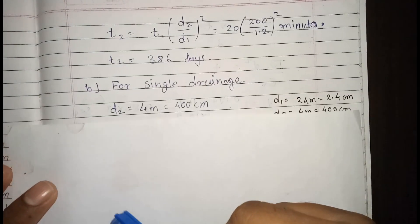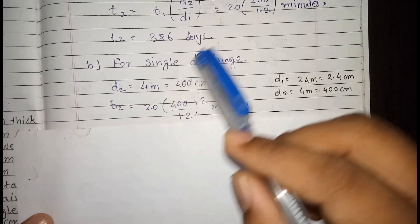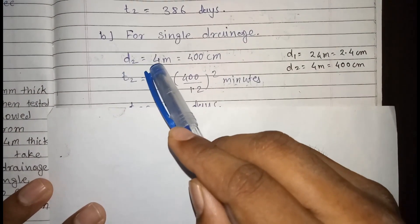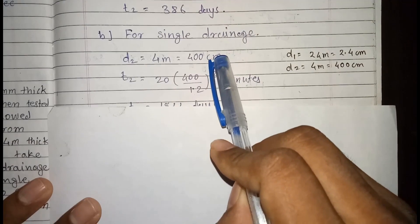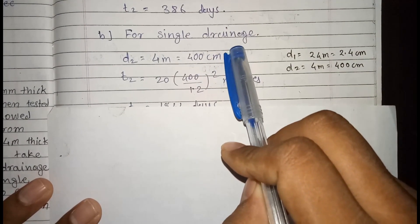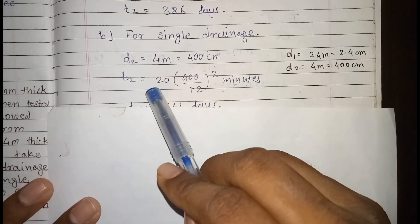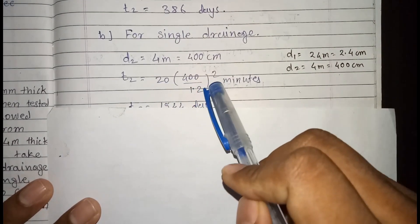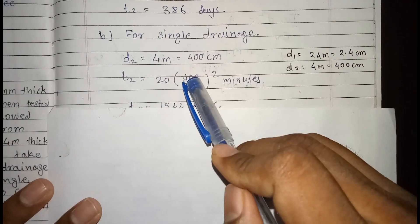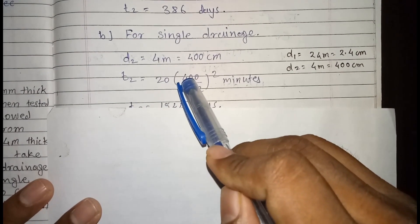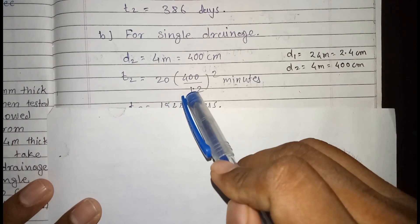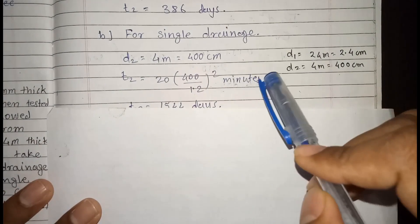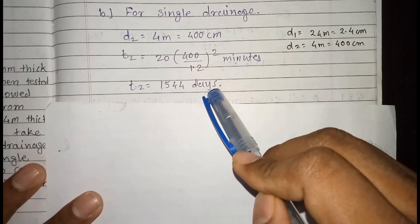Now for the second condition: single drainage. In the first condition we calculated for double drainage. For single drainage, D2 equals 4 meters, equal to 400 cm. We do not divide by 2 here since drainage is single. Using the same formula: T2 = T1 × (D2 / D1)², where T1 is 20 minutes, D2 is 400 cm, and D1 is 1.2 cm from the lab double drainage condition.